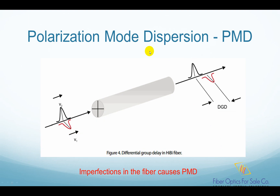This picture shows how actual PMD in the fiber looks like. A light pulse is generated and coupled into the fiber. Imperfections in the fiber cause PMD, so at the end of the fiber, these two orthogonal polarization modes arrive at different times. The timing difference is called differential group delay. This phenomenon is called PMD.